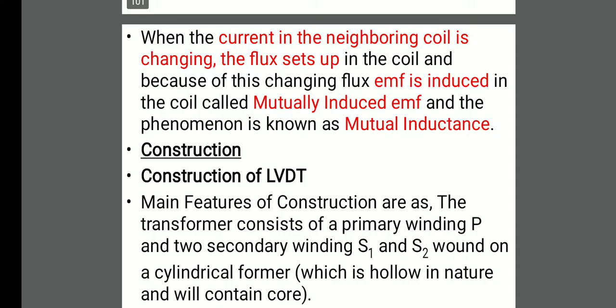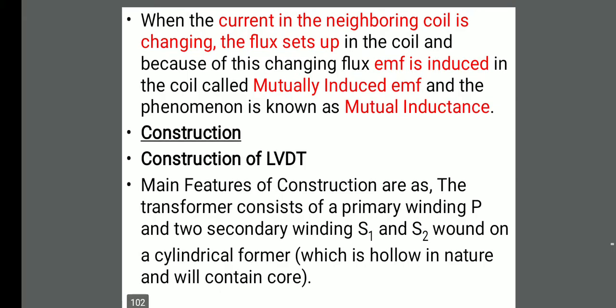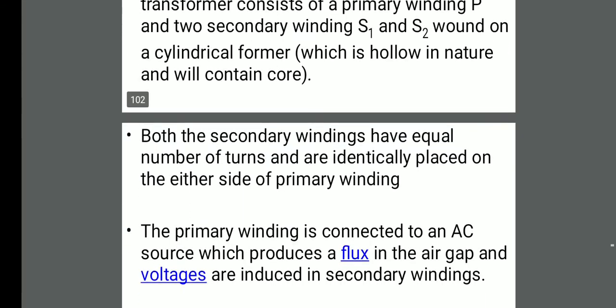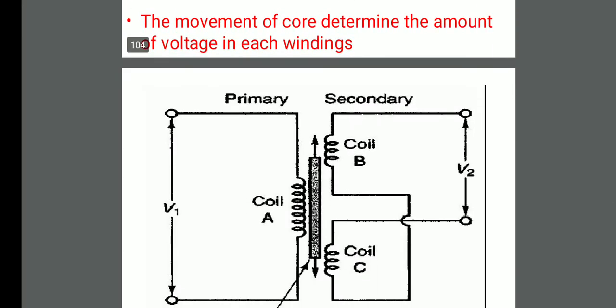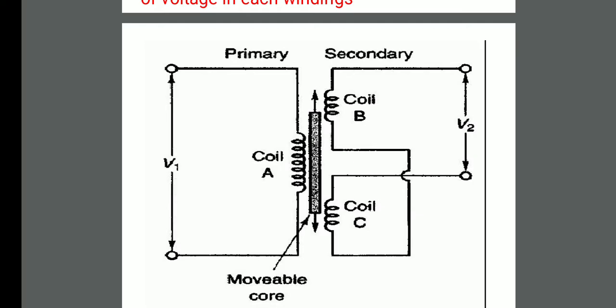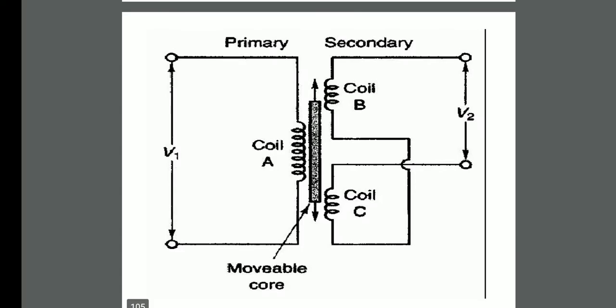To understand the construction of the LVDT transducer, we will see the figure. The figure shows an LVDT transducer where we have a primary winding and two secondary windings. The primary winding is represented as coil A, and we have secondary coils B and C. A movable core is placed in the air gap between the primary and secondary coils. This movable core is connected to the point where we have to measure the displacement.